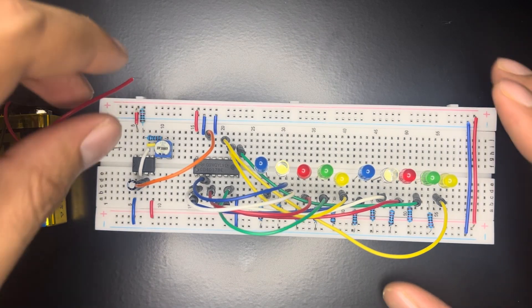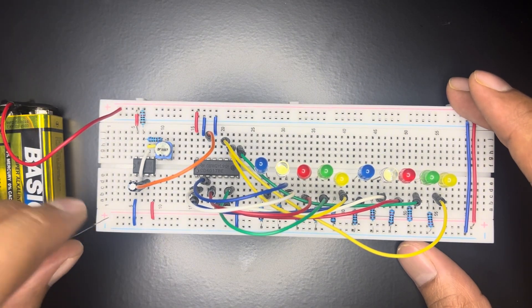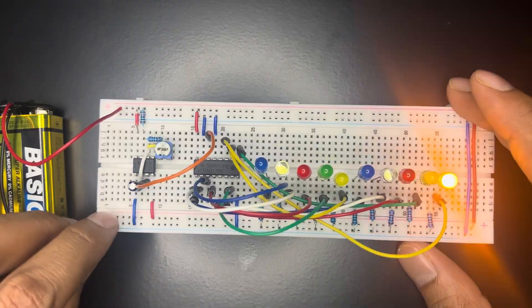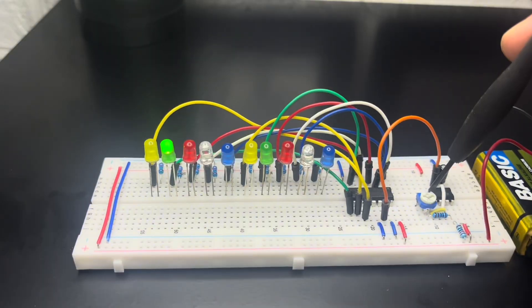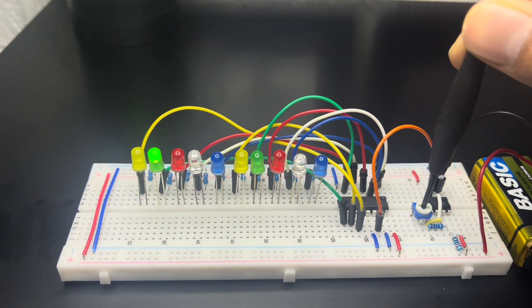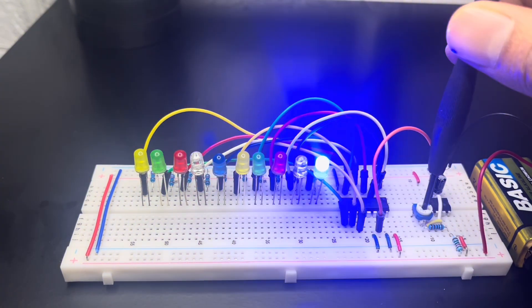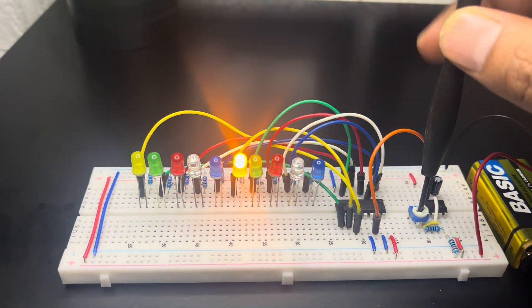Connecting a 9V battery to the power rail will complete our project. We can increase or decrease the speed of LED chaser by simply rotating the potentiometer.